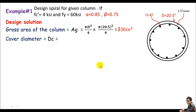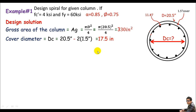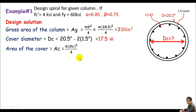Next, I calculate the core diameter by subtracting two times the concrete cover from the external diameter. External diameter is 20.5 inches, so: dc = 20.5 − 2(1.5) = 17.5 inches. Then the core area Ac = π·dc²/4 = π × (17.5)² / 4 = 240.53 square inches.